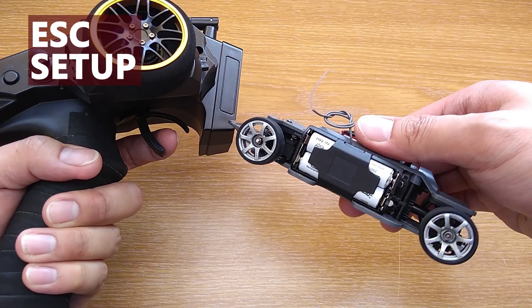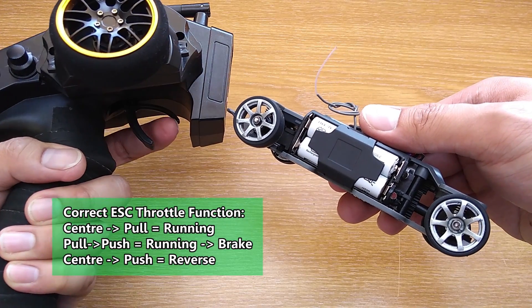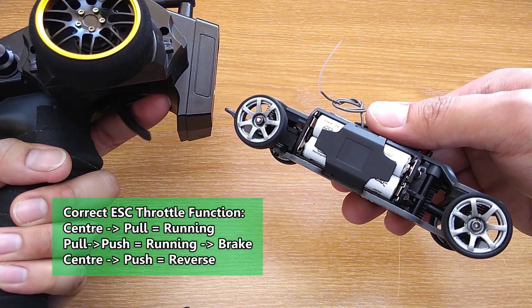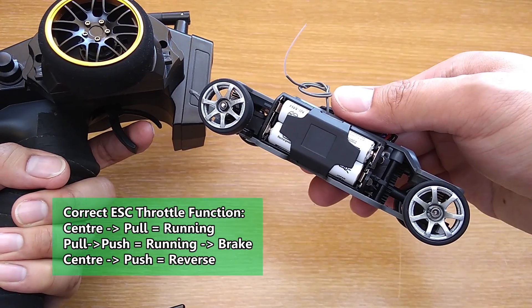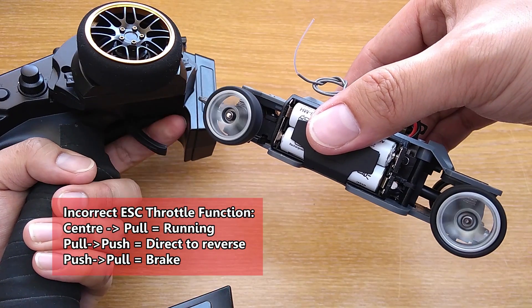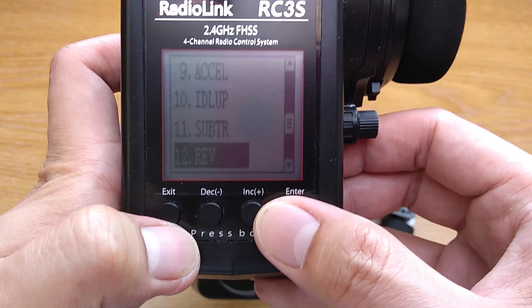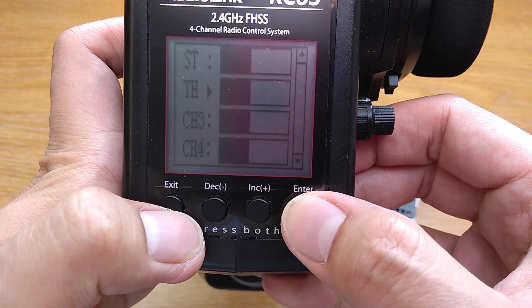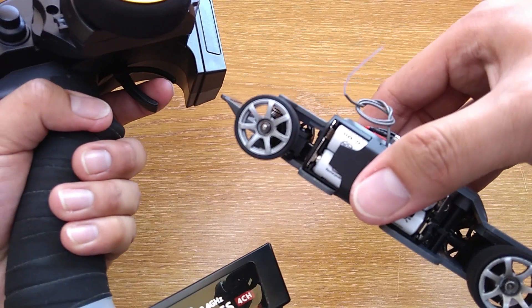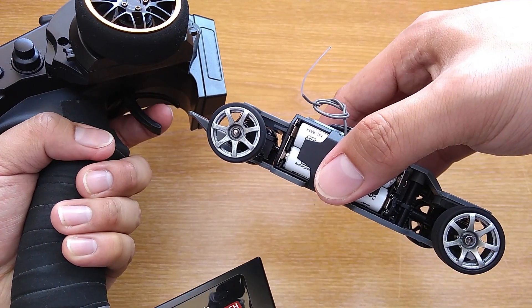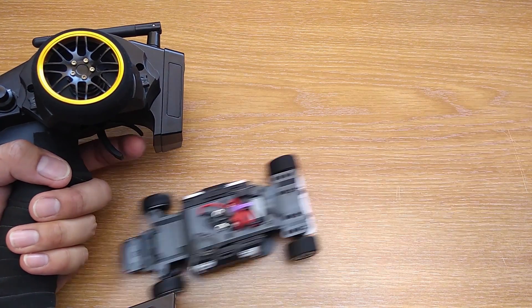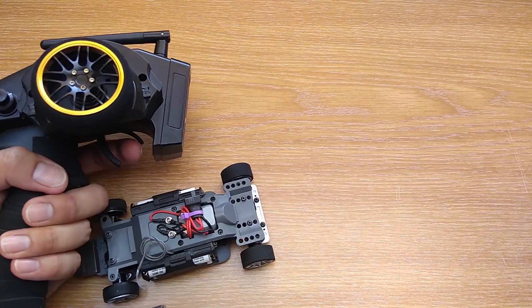Now it's time to set up the ESC. First check the function to see if it goes when you pull the trigger, then brake when you switch directly from pulling to pushing the trigger, then come back to centre and push it again to go the opposite direction. If not, you have to reverse channel 2 on the transmitter. Then check the direction. If it goes the wrong way, you have to swap the wires on the motor.